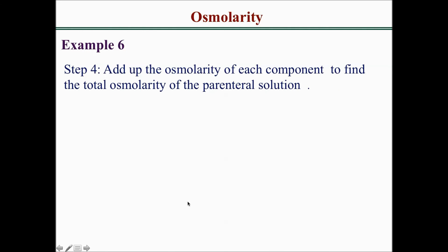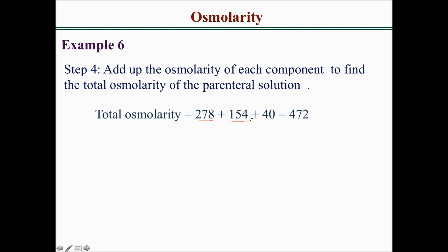Step 4 is to add up the osmolarity of each component to find the total osmolarity of the parenteral solution. Adding 278 (dextrose) plus 154 (sodium chloride) plus 40 (potassium chloride) gives a total osmolarity of 472 milliosmol per liter.